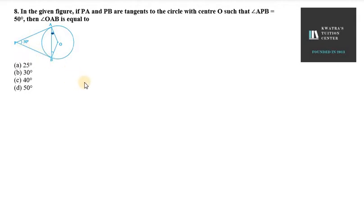It is given that APB is 50 degrees. We know that radius and tangent are perpendicular at their point of contact. So at point of contact A, this angle is 90 degrees. At point of contact B, this angle is also 90 degrees.